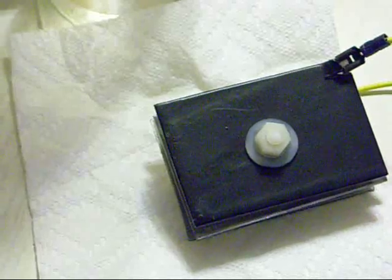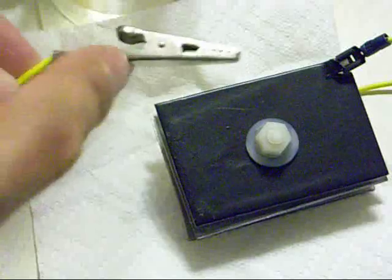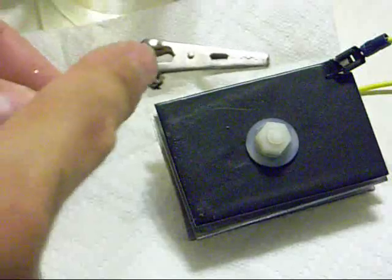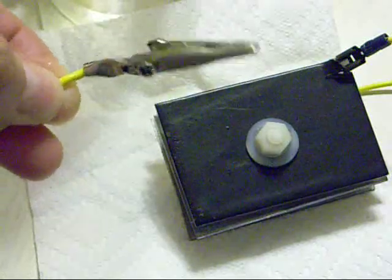For instance if I were to take this lead, this alligator clip, and I wanted to insulate this, I would just dip this part of it into the plastic coat and it creates a nice durable and rugged plastic coating to it.